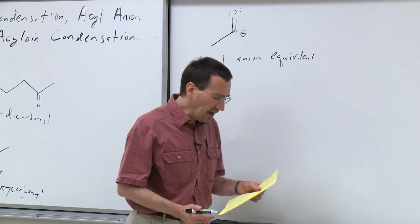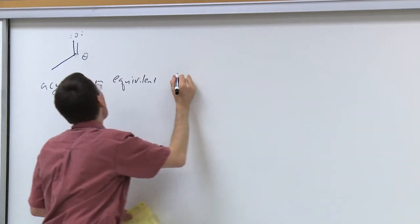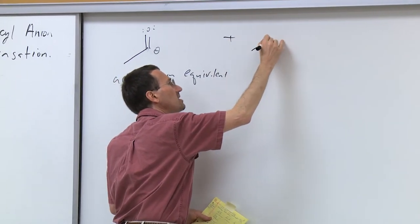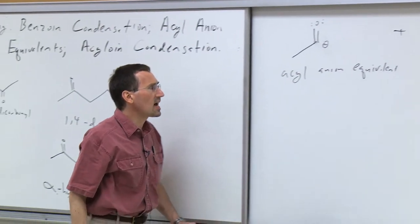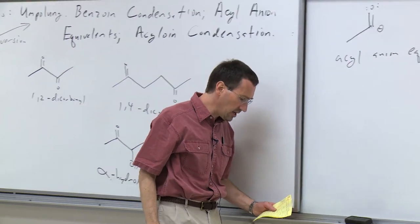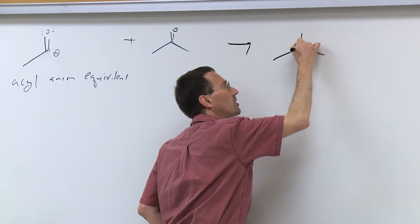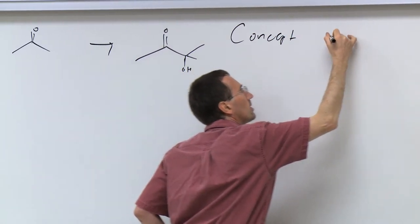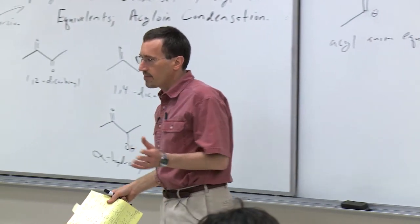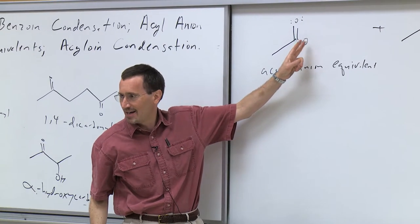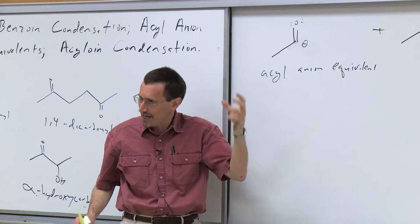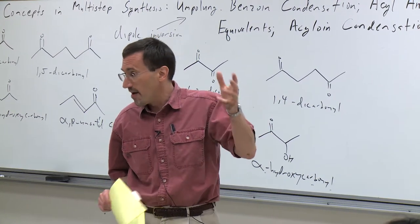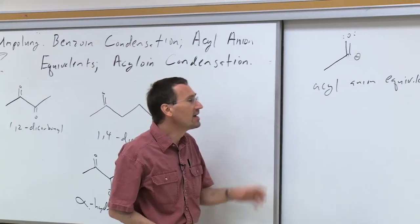The basic idea in acyl anion chemistry is we're going to have some acyl anion equivalent and some type of carbonyl compound, and you could easily imagine a reaction that could do this. But this is the concept, not the practice. The obvious problem: if I imagine generating an anion next to a carbonyl, I can't just pull a proton off an aldehyde—the aldehyde is going to self-condense, and the alpha position is more acidic. So one has to do something in order to achieve this.